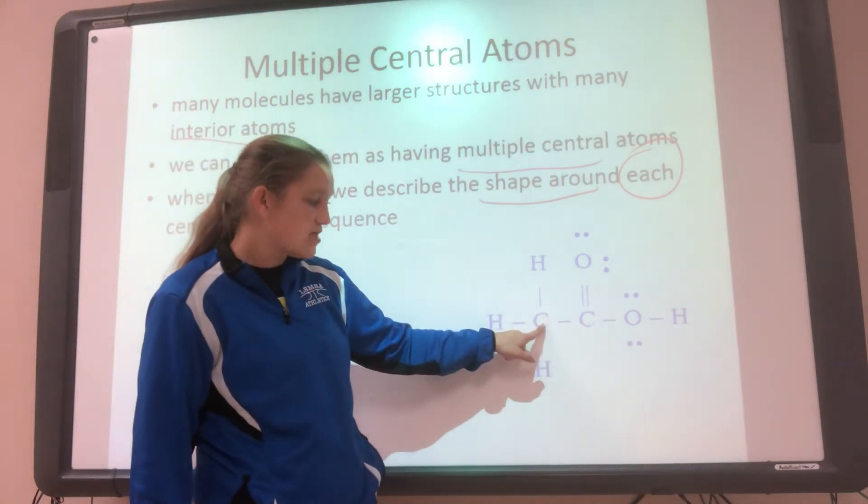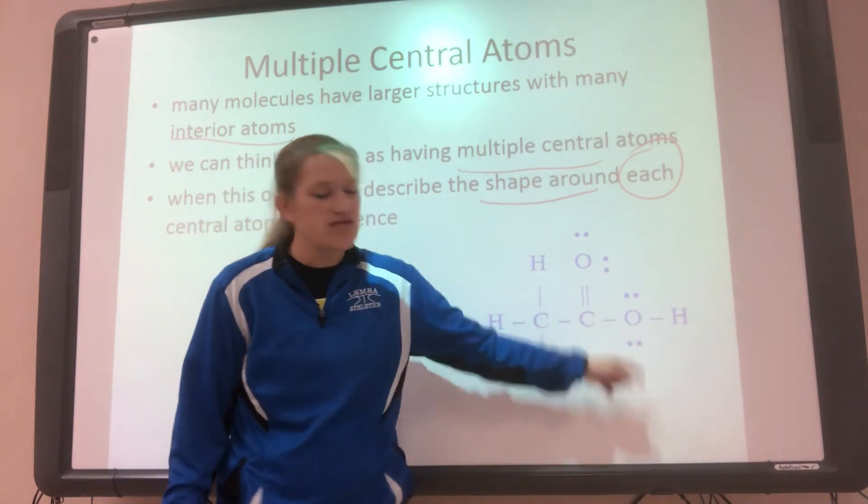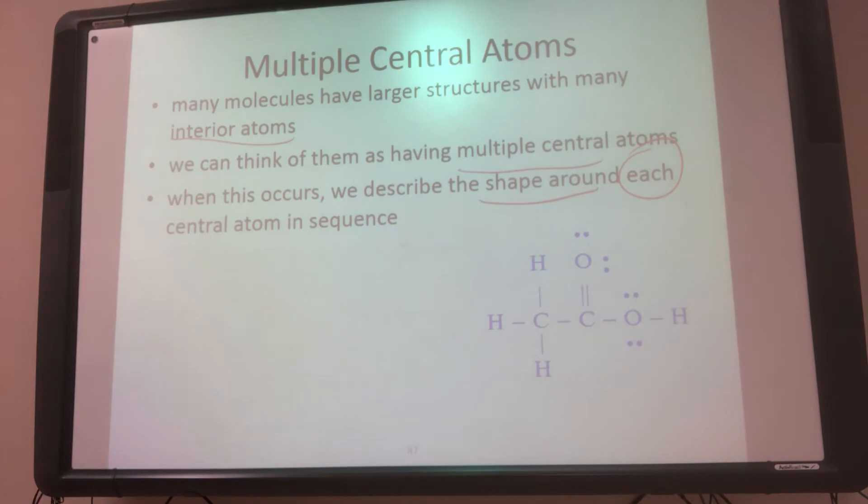So let's look at this guy. So if you look at this guy, you can consider, well, he's on the outside, outside, outside, but he's central. He's kind of in the middle and he's in the middle. So then you can think about all three of these as being central atoms. So then when we talk about the shape, we want to talk about the shape around each one.